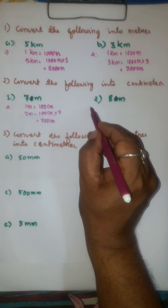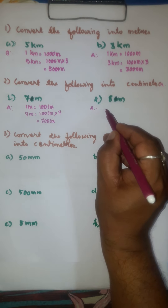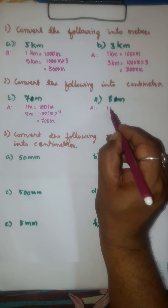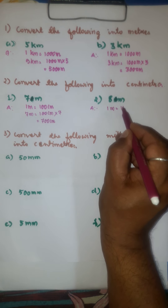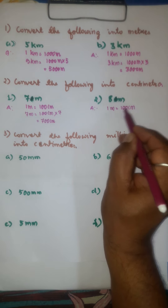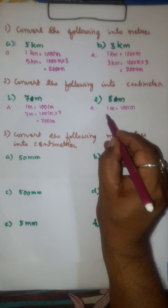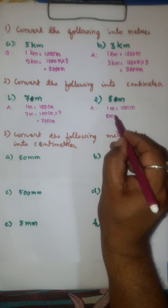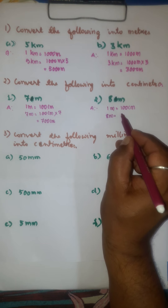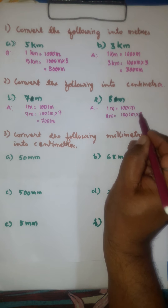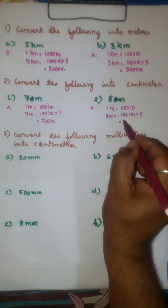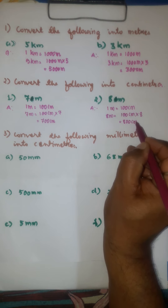Second one: 1 meter is equal to 100 centimeters. So, 8 meters is equal to 100 centimeters into 8. That is equal to 800 centimeters.